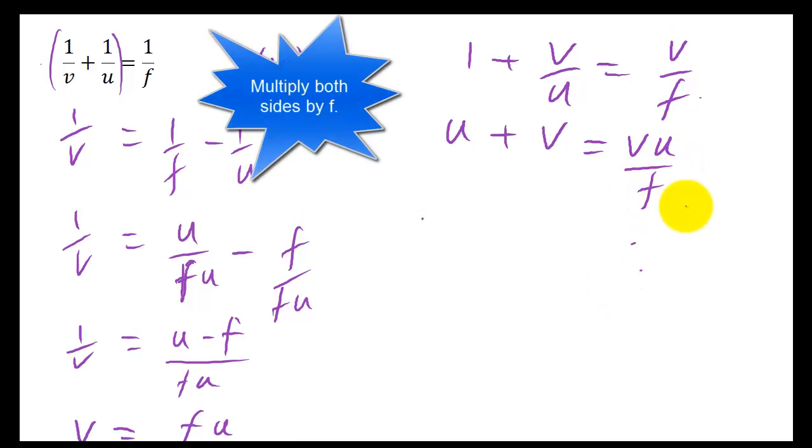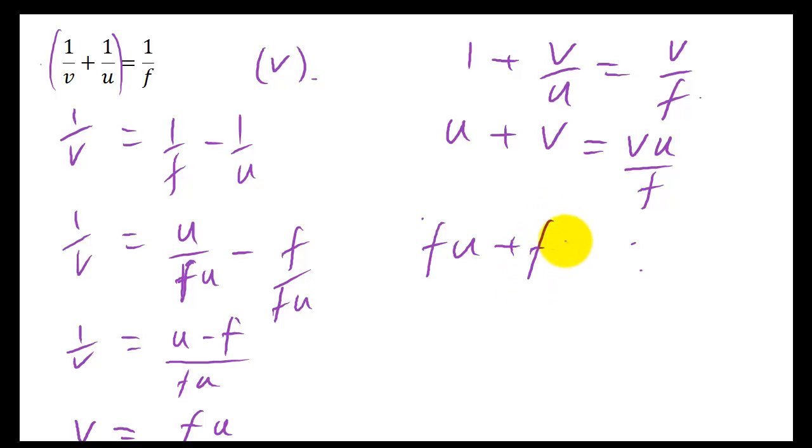Now I'm going to times both sides by F. So times this by F, I get FU. Times this by F, I get FV. And times this by F, I'm just left with UV.